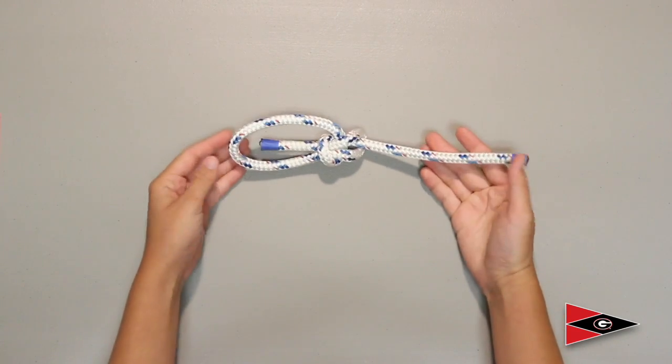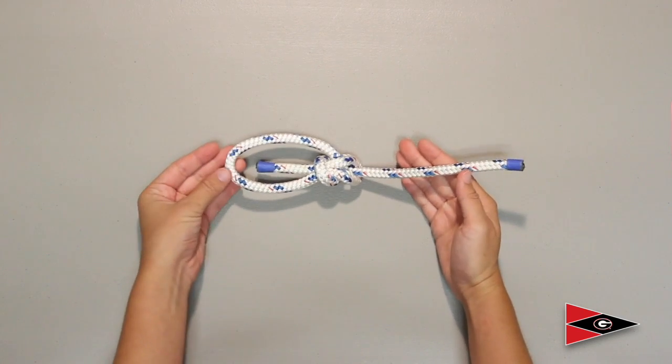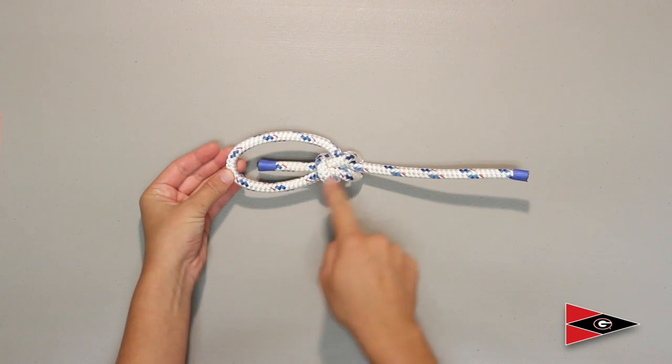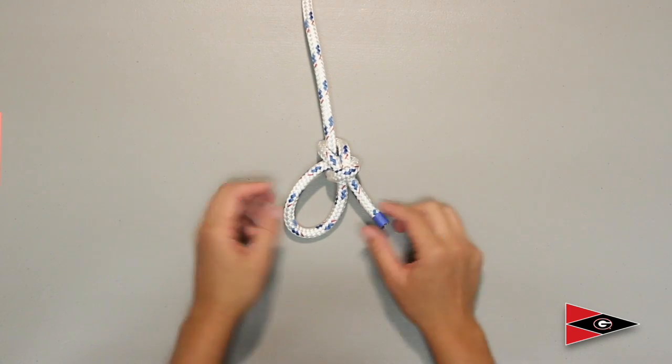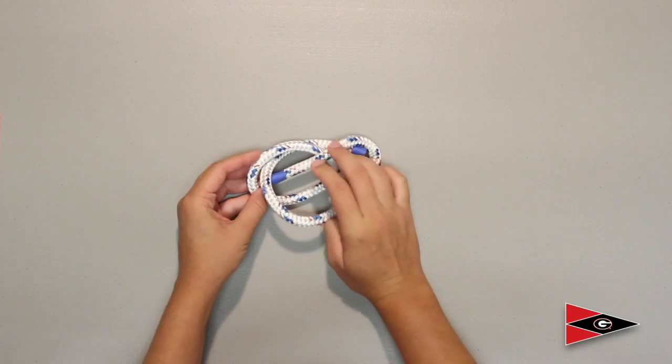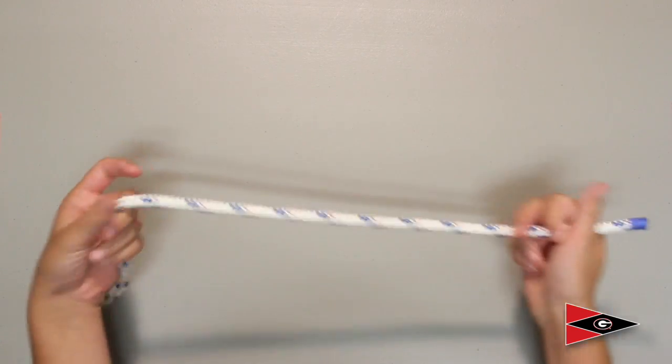So now we're going to tie a bowline. So this is what a bowline looks like. And the tail is inside the loop. If you wind up with the tail outside the loop, then you've done something wrong. But we're going to go over the correct way to tie it to make sure that your tail is inside the loop.